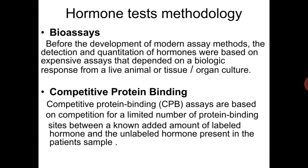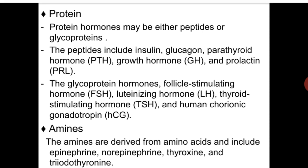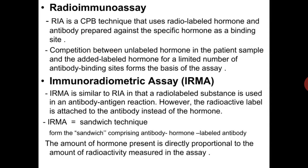Let's go to the other slide. We have radioimmunoassay, abbreviated as RIA. It is a method from the protein-bound competitive technique that uses radiolabeled hormone and an antibody prepared against a specific hormone as a binding site. Competition between unlabeled hormone in the patient sample and added labeled hormone for a limited number of antibody binding sites forms the basis of the assay.